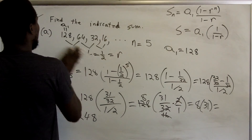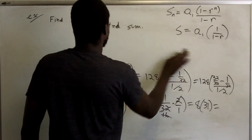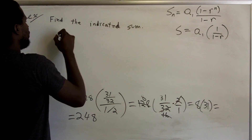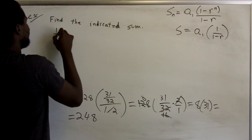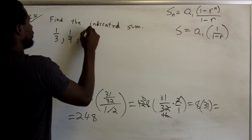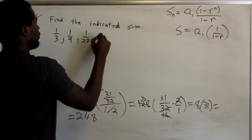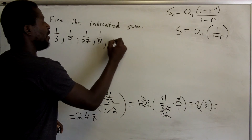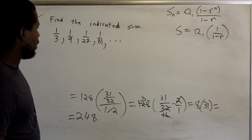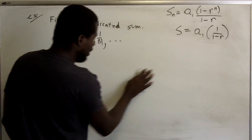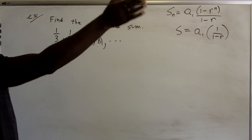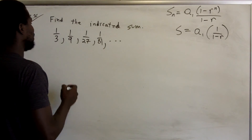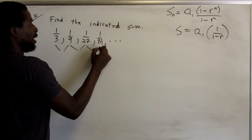Now let's look at what happens when we have an infinite geometric sequence. We have a sequence — let's say it begins 1/3, 1/9, 1/27 — and we want to find the sum of all the terms. There's no stopping value for n here; we want the infinite sum, adding all the numbers all the way to infinity.